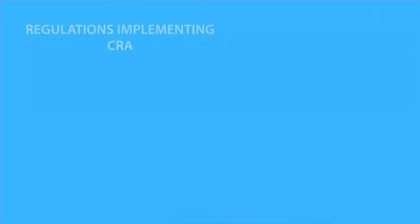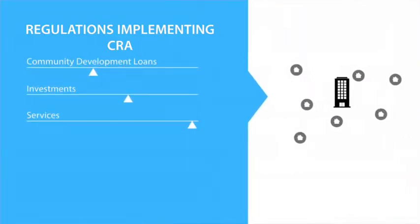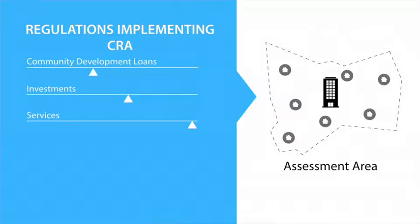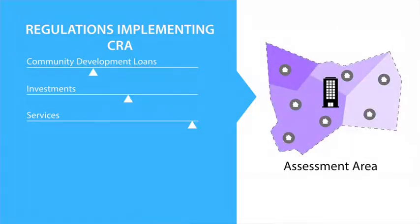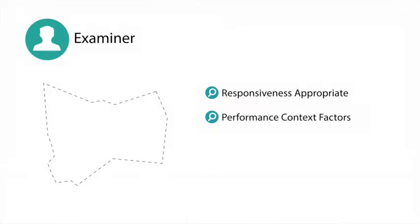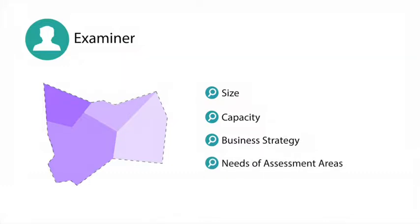Because community development activities are so complex, they are often spearheaded by organizations that operate over large statewide or regional areas. For this reason, a bank's community development loans, investments, and services are reviewed for consideration if they are in the bank's assessment area or the broader statewide or regional area that includes the assessment area. In fact, if a bank has been responsive to the needs of its assessment area, they may also receive consideration for community development activities that may not have any direct impact in its assessment areas. An examiner determines if the level of responsiveness is appropriate as it relates to performance context factors unique to each evaluation, such as the bank's size, capacity, business strategy, and the needs of its assessment areas.